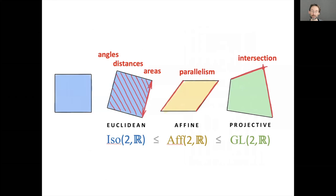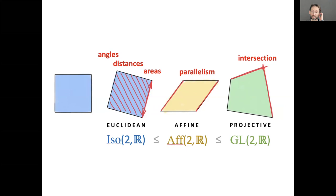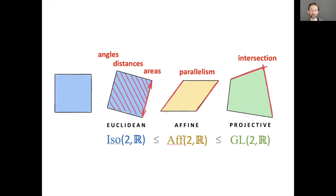Klein proposed a radically new idea: to approach geometry as the study of invariants or symmetries — properties that are preserved under some class of transformations. This class of transformations was formalized using the language of group theory, which was first introduced by Galois around 1830. Klein together with Sophus Lie worked extensively on this apparatus to formalize geometry.